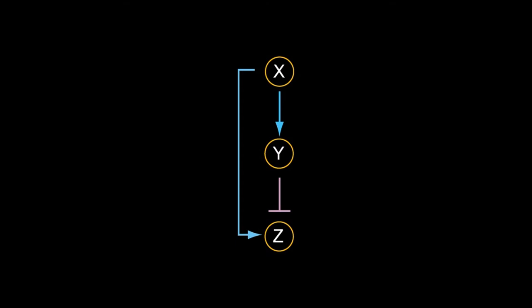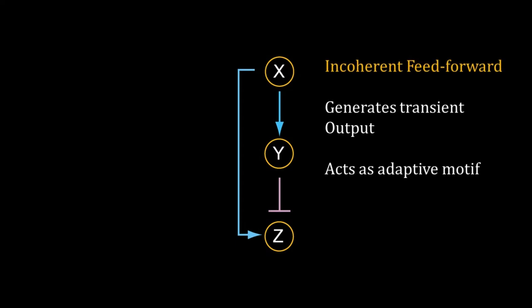Incoherent feed-forwards have two interesting properties: they can generate a transient output for a persistent signal, and they can work as an adaptive motif. I will discuss these two properties.